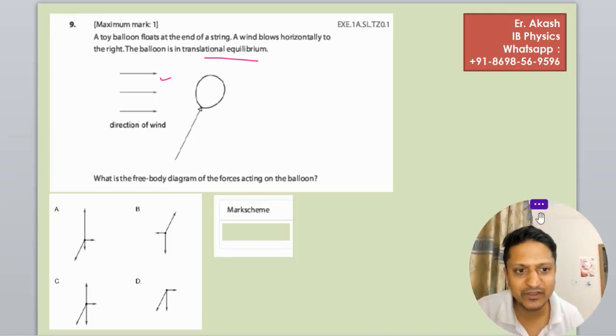Hello champions, how are you? There is another question: A toy balloon floats at the end of a string. A wind blows horizontally to the right. The balloon is in translational equilibrium. So there is a balloon moving, and the direction of wind is from the right. What is the free body diagram of the forces acting on the balloon?